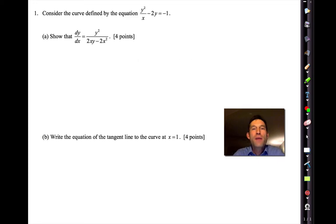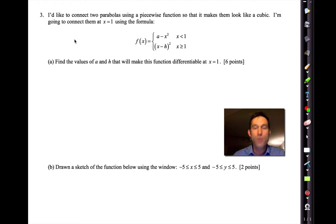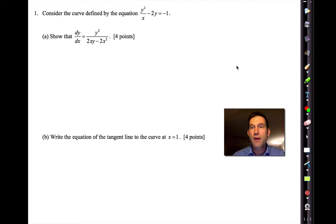So let's take a look at the first problem. In this problem we've got the implicit derivative and we've got a curve that is defined implicitly by y²/x - 2y = -1. Remember though, that is the function implicitly defined, but it is the function. And what we're asked in part a is to show that dy/dx, the slope of the tangent line, is given by this expression.